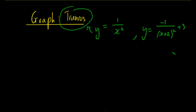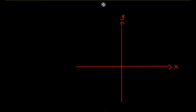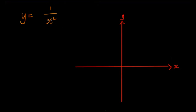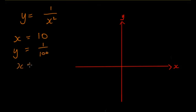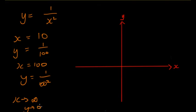So what does it look like? The Truncus has the equation y = 1/x². It's like an inverse equation with regards to its 1 over something, like the hyperbola. When x = 10, y = 1/100. When x = 100, y = 1/10000. So when x approaches infinity, y approaches 0, meaning it comes down like that.